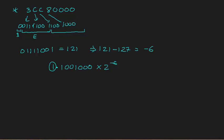To recover the actual decimal value, we need to nullify the 2 to the power of minus 6. We can do this by shifting the decimal point 6 places to the left, which is equivalent to multiplying by 2 to the power of 6. Since minus 6 plus 6 equals 0, we end up with 2 to the power of 0.